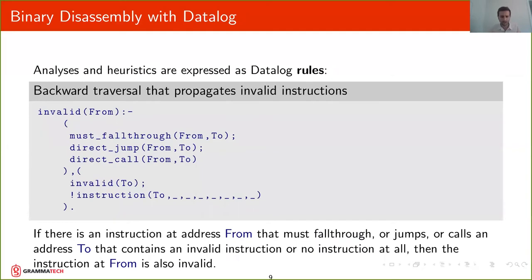Once we have these facts then the analysis and heuristics are expressed as Datalog rules. And this is an example of a Datalog rule that performs a backward traversal that propagates invalid instructions. And the way you read this rule is the following: If there is an instruction at address From that must fall to or jump or calls an address To that